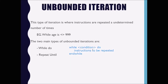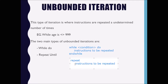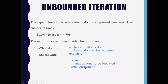The condition is at the top in a while loop. The repeat-until structure is different — its syntax is: repeat, then the instructions to be repeated, then until [condition]. The while construct tests the condition before it carries out the instructions, whereas repeat-until executes the instructions first and then tests the condition. That is the difference between the two.